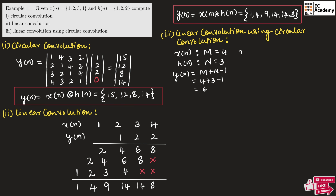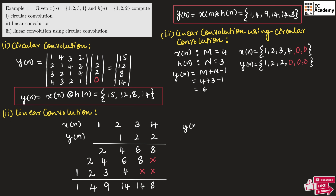We write x of n as 1, 2, 3, 4, and append two zeros to make the length equal to 6. We write h of n as 1, 2, 2, and append zeros: 0, 0, and 0, to make the length of h of n equal to 6. Once we have both sequences of length 6, we can use the circular convolution matrix method. We need to find y of n by writing a 6 by 6 matrix for x of n in circular form.